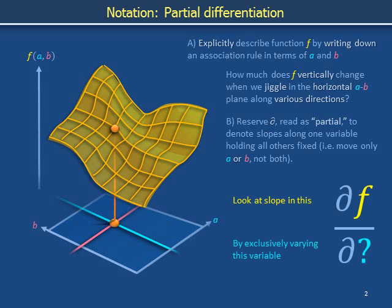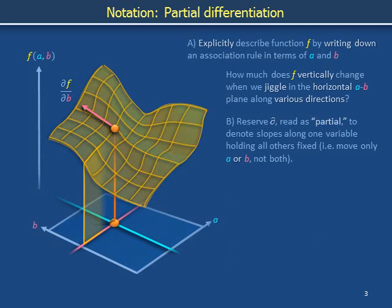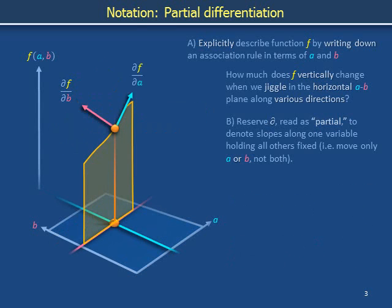The variable from whose height a slope is to be calculated appears in the upper part of the symbol, and the variable along which these heights are to be compared appears in the lower part of the symbol. For example, the symbol ∂f/∂b specifies the slope calculated by holding constant a, which would otherwise be variable, while jiggling b. In the same sense, the symbol ∂f/∂a refers to the slope calculated by jiggling a while holding b constant.